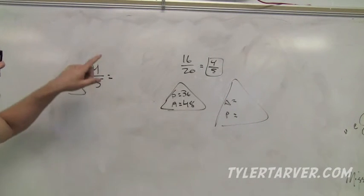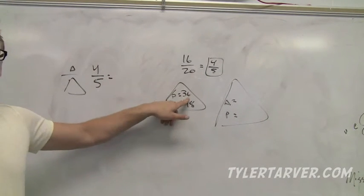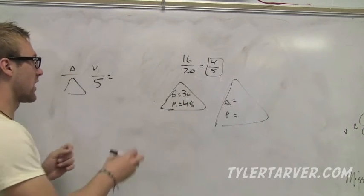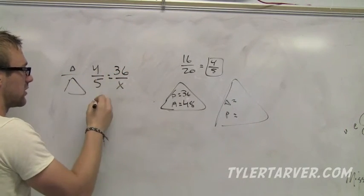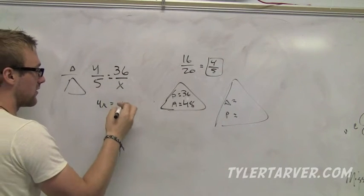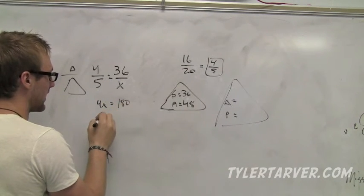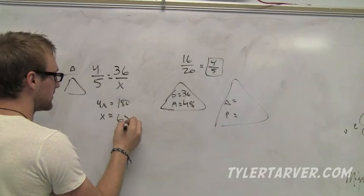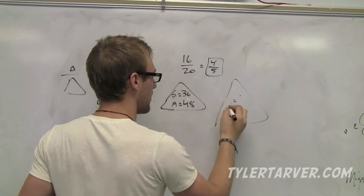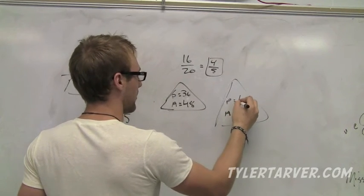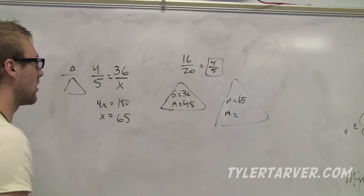36 is the measurement of our small triangle. So, it has to go on top. X goes on bottom. Cross multiply. 4X equals 150. That's 180. X equals 65. That has to be the perimeter of our new one. Just set up the proportion and solve it.